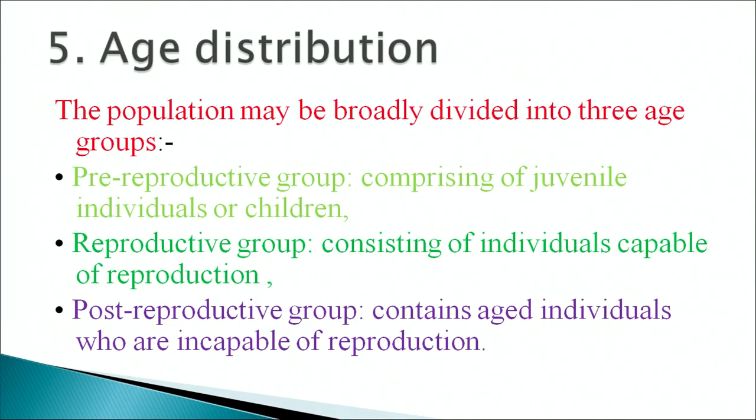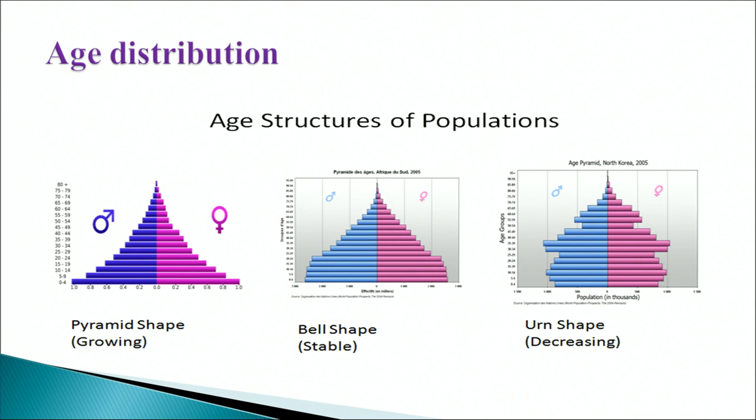Next is age distribution. The population may be broadly divided into three age groups: the pre-reproductive group comprising juvenile individuals or children; the reproductive group consisting of individuals capable of reproduction; and the post-reproductive group containing aged individuals incapable of reproduction. Age structure of populations can be depicted as a pyramid shape (growing), bell shape (stable), or urn shape (decreasing).